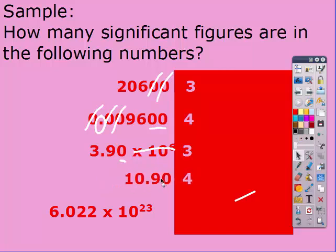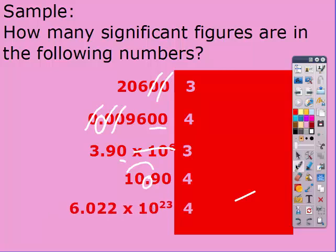For the fourth one, the answer is four — there's a decimal, and that zero is captive. And for the last one, four — ignore the times 10 and the captive zero counts.